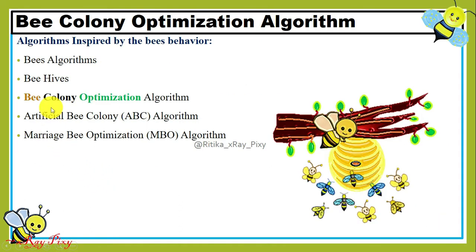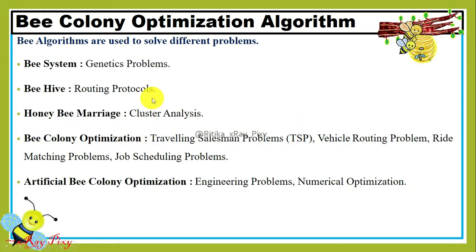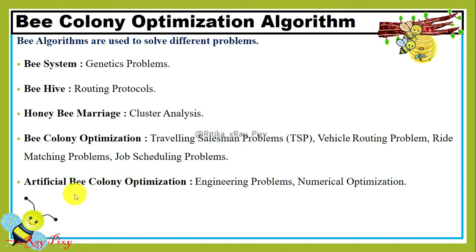There are a number of algorithms inspired by the behavior of bees, for example: Bee Hive, Bee Colony Optimization Algorithm, Artificial Bee Colony Optimization Algorithm, and Marriage in Honey Bee Colony. We can use the Bee System to solve different genetic problems, Bee Hive to solve different routing protocol problems, Honey Bee Marriage for cluster analysis, Bee Colony Optimization for solving the Traveling Salesman Problem, Vehicle Routing Problem, Ride Matching Problem, and Job Scheduling Problem. Artificial Bee Colony Optimization can solve different numerical optimization and engineering problems.